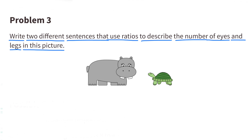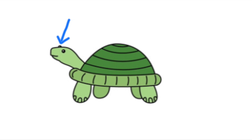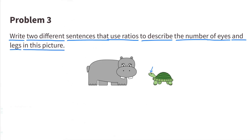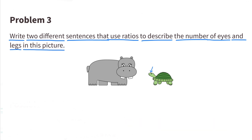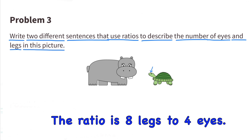Number 3: Write 2 different sentences that use ratios to describe the number of eyes and legs in this picture. I almost missed it, but you can barely see the second eye on the turtle. So there are 2 eyes on the turtle and 2 eyes on the hippo, giving a total of 4 eyes and 8 legs altogether. The ratio is 4 eyes to 8 legs. Another sentence: the ratio is 8 legs to 4 eyes.